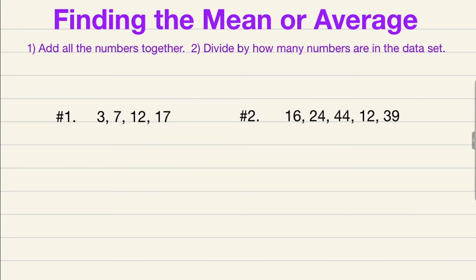Looking at number one, we have four numbers in our data set: 3, 7, 12, and 17. The first step is to add all of your numbers together. So for number one we're going to do 3 + 7 + 12 + 17.